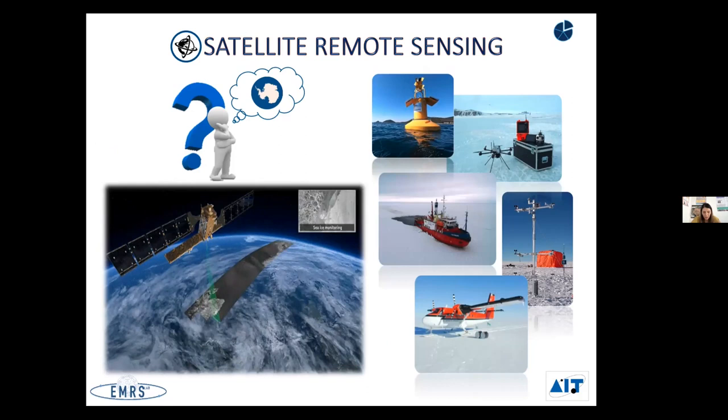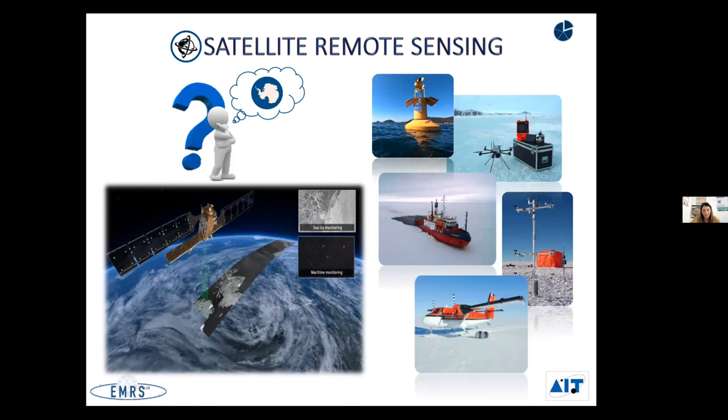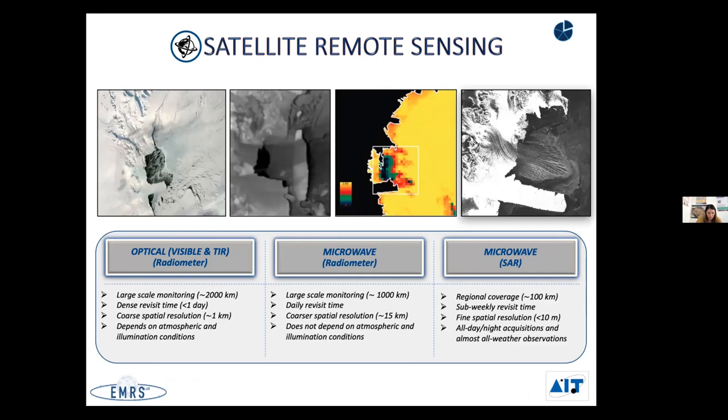Satellite remote sensing is a key element for polynya monitoring. The observation of polynyas from satellite is made with microwave sensors. On one side, we have passive microwave sensors such as radiometers, with a daily revisit time but with a coarser spatial resolution. On the other side, we have active microwave sensors such as synthetic aperture radar, with a longer revisit time but with a very fine spatial resolution of a few meters.